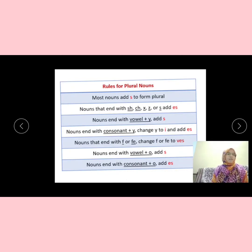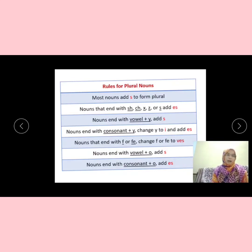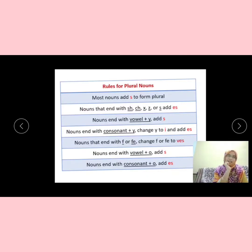For example, 'fish' — F-I-S-H — it ends with S-H, so we will add E-S to make it 'fishes' — F-I-S-H-E-S. That is the example for rule number two. And the third rule: when a noun ends with vowel plus Y, then we have to add S.